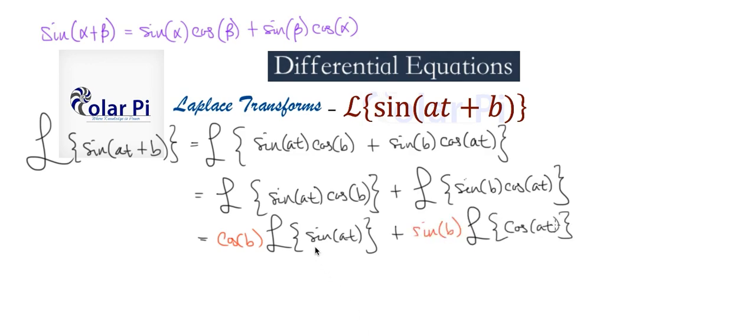Now, I have videos dedicated to showing you the Laplace transform of sine of at and likewise with the Laplace transform of cosine of at, so I'm not going to do that here - you can check out those videos. But what we have is cosine of b times the Laplace transform for sine of at is going to be a divided by s squared plus a squared, and similarly in the other part...